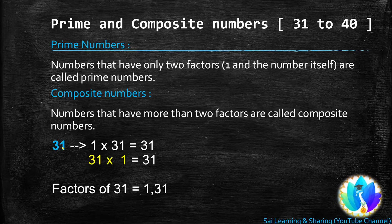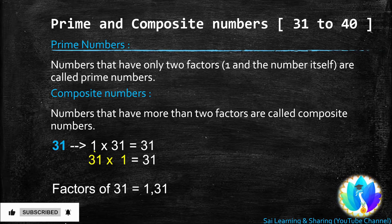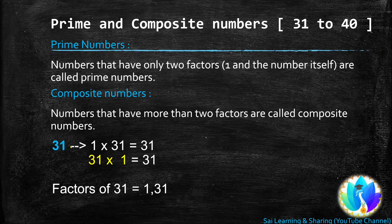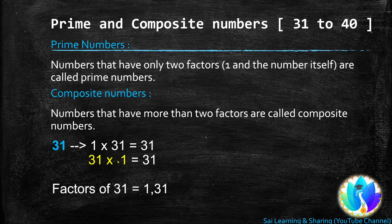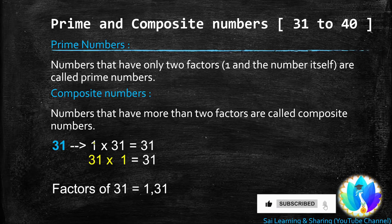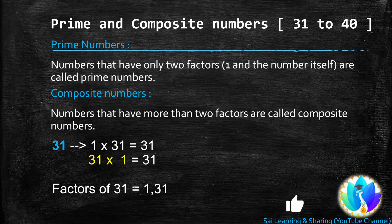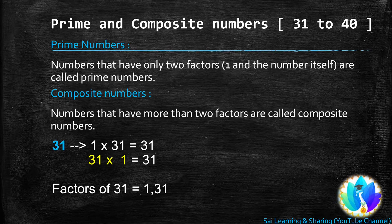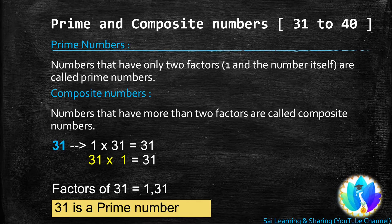Let us see for 31. 1 is a factor of every number, so 1 times 31 equals 31. 31 is not a multiple of 2 because the ones place is not an even number. 31 is not a multiple of 3. At last, 31 times 1 is 31. We got all the factors of 31: 1 and 31. A number with only two factors is a prime number. So 31 is a prime number.